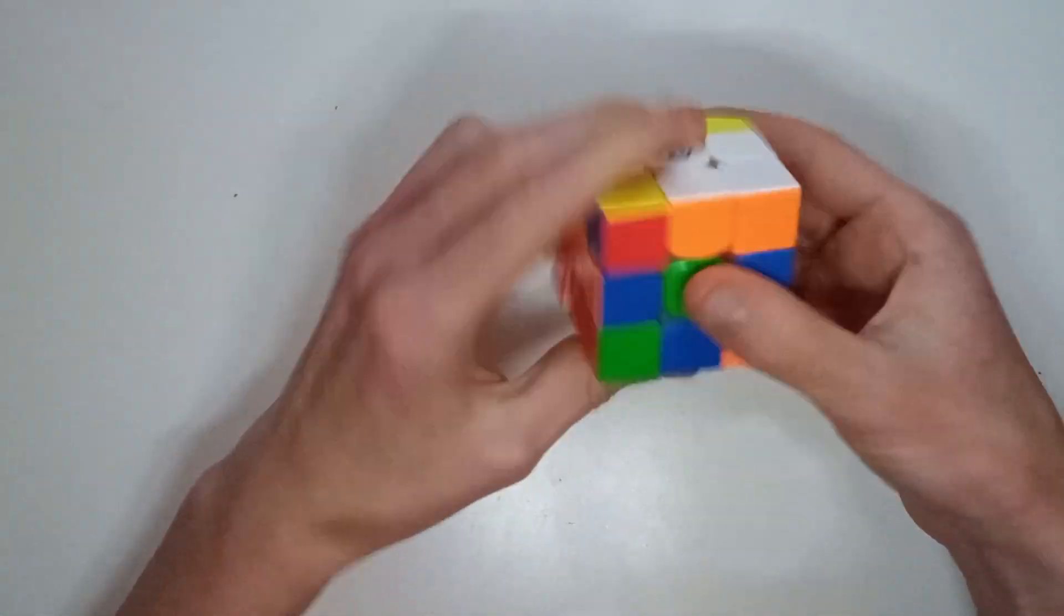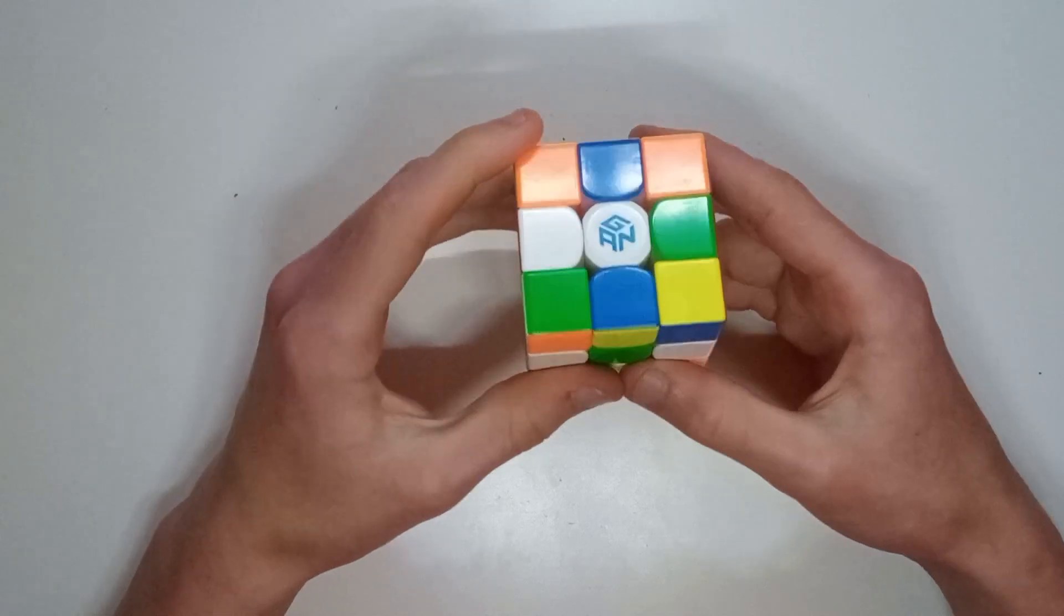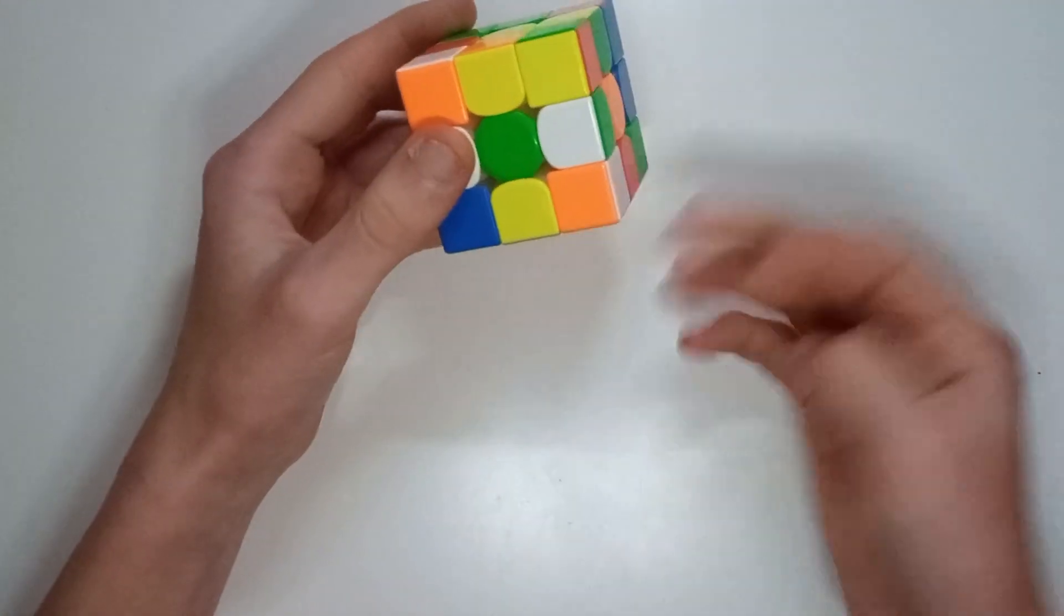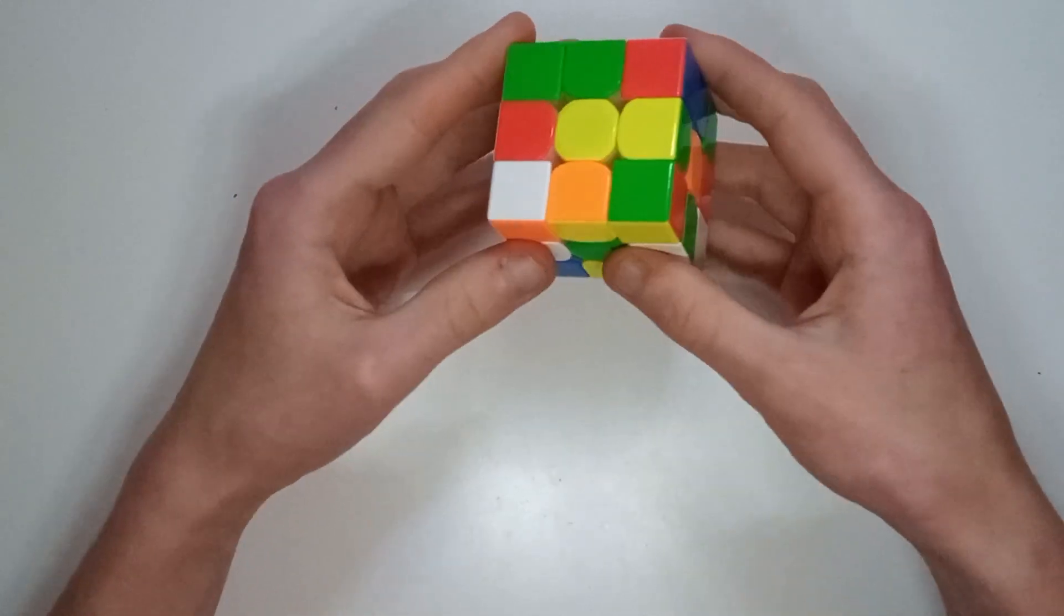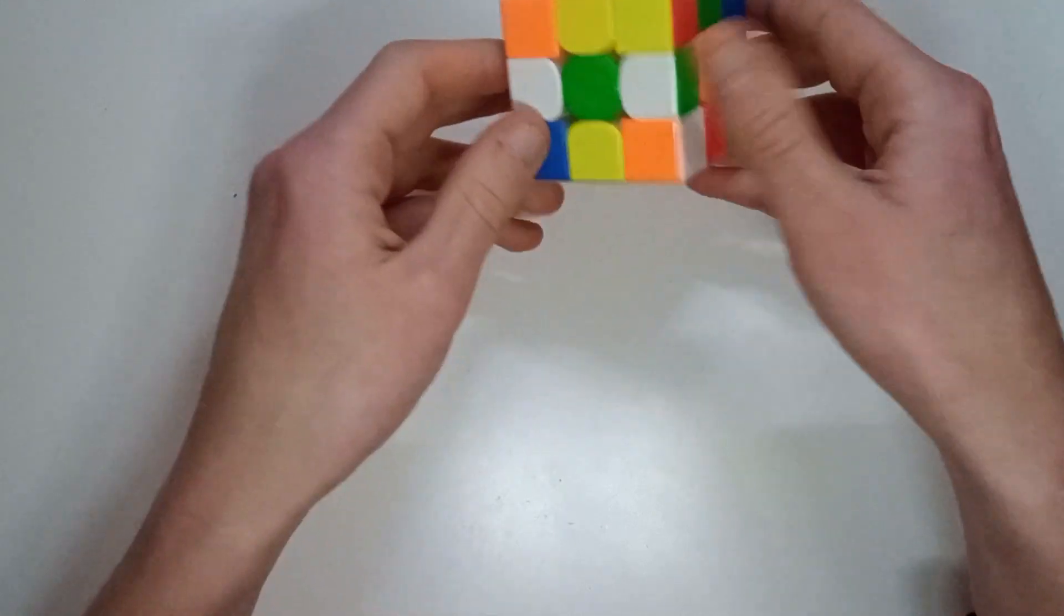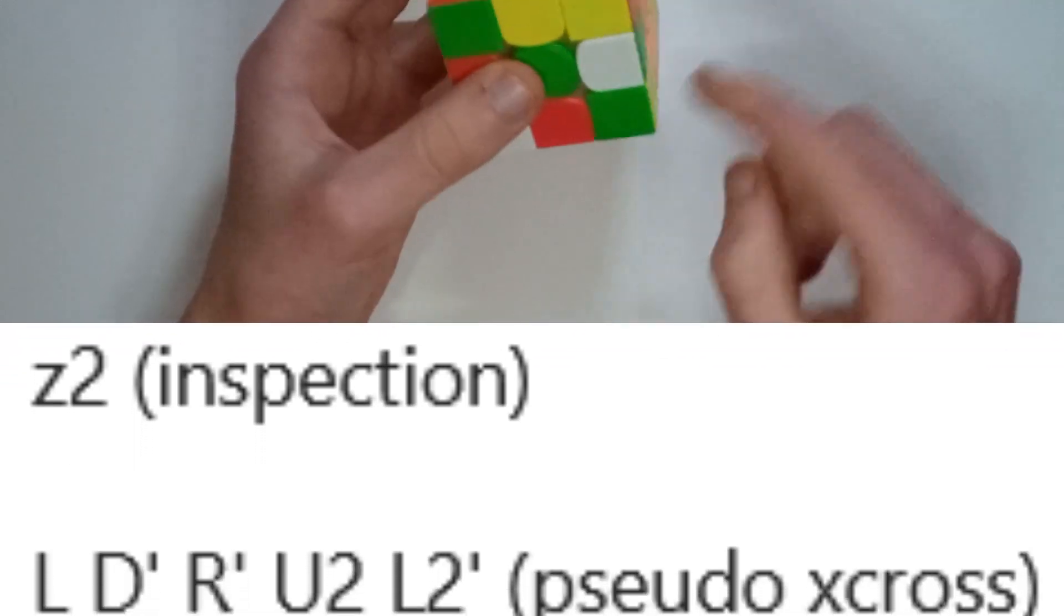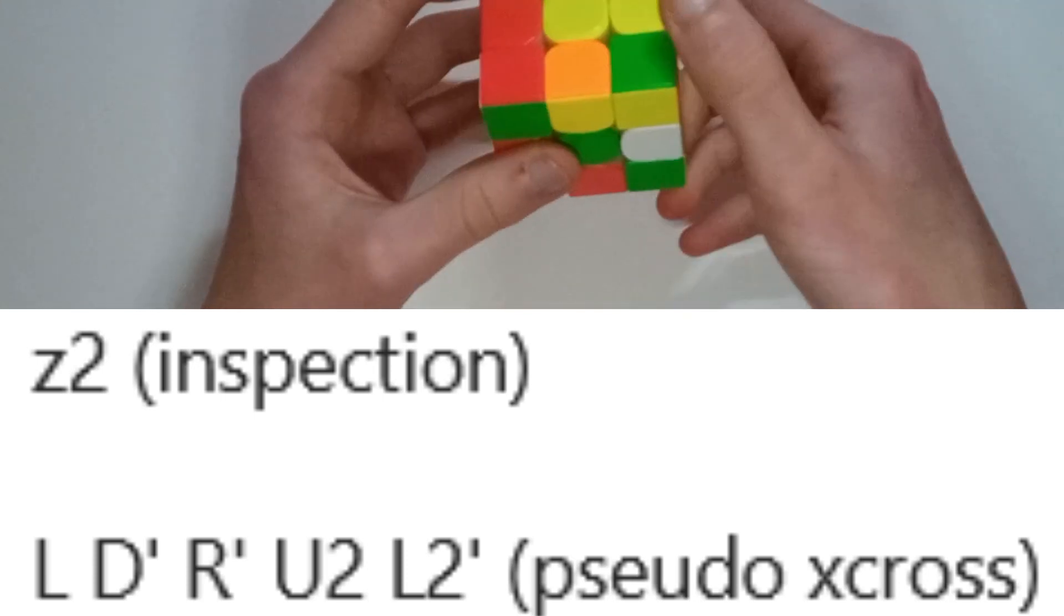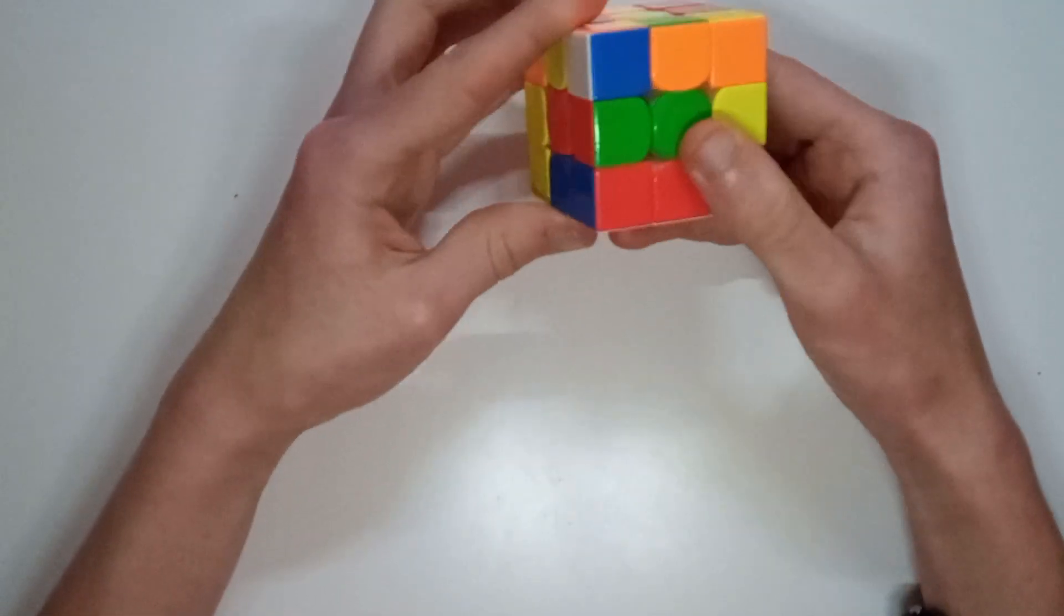However what Tymon did is actually way cleverer. So rotated to obviously white on bottom, he's not a white cross only solver so it's just coincidental that it's white cross this time. And he matched this up, orange being opposite red like that, and then rotated so D' to get that pair there.